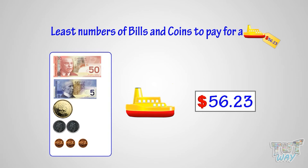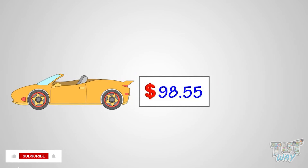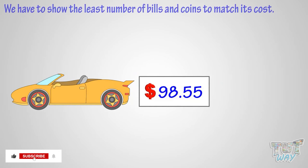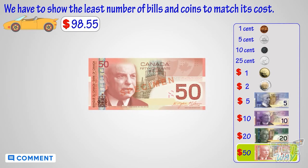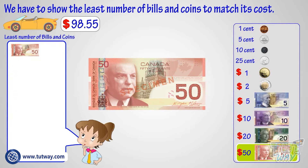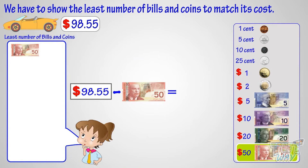Now let's take another example. Here is a toy car with its cost mentioned — we have to show the least bills and coins to match its cost. The amount is more than the biggest bill we have, that is fifty dollars. So take out one fifty-dollar bill. Now subtract fifty dollars from ninety-eight dollars and fifty-five cents — we are left with forty-eight dollars and fifty-five cents.